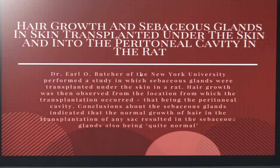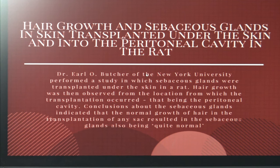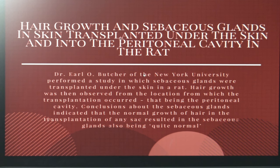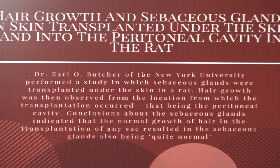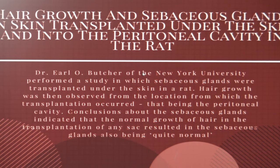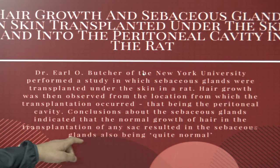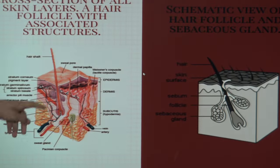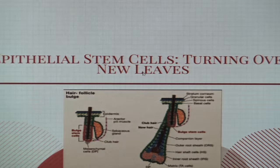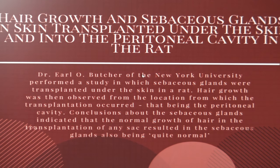Here is a more direct example of sebaceous gland transplantation, done by Dr. Elwell Butcher at the University of New York. In this study, sebaceous glands were transplanted under the skin of a rat and hair growth was observed at the transplantation location — the peritoneal cavity. The conclusions were that normal hair growth occurred at any of these transplantation sites, described by Dr. Butcher as quite normal and indistinguishable from growth on any other part of the animal. Hair follicles with pedicels to the surface had higher chances of survival, and were able to propagate and produce sebum.